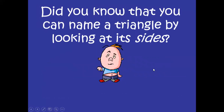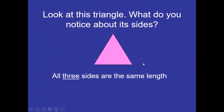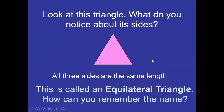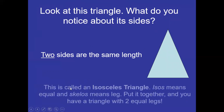Now we are going to name triangles by looking at their sides. Look at this triangle — what do you notice about its sides? All three sides are equal; they measure the same. So it is called an equilateral triangle because all three sides are of the same length. The second triangle has only two sides that are the same and the third side is different — it looks like two equal legs.